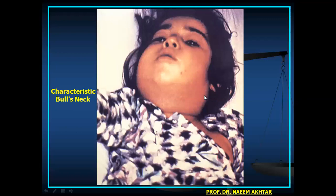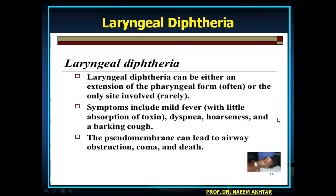This patient shows a characteristic bull's neck. Laryngeal diphtheria can be either an extension of the pharyngeal form, which is common, or primary laryngeal involvement, which is rare. Symptoms include mild fever with little toxin absorption, dyspnea, hoarseness, and a barking cough. The pseudomembrane can lead to airway obstruction, coma, and death.